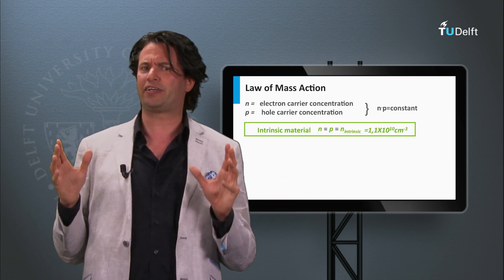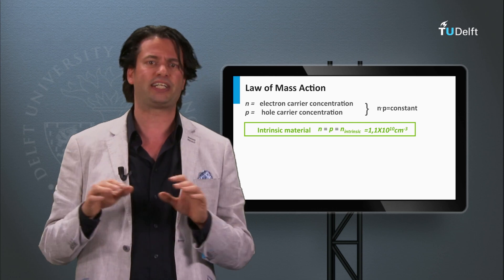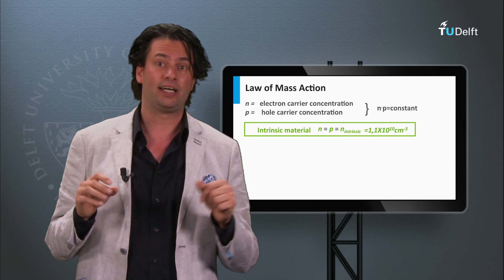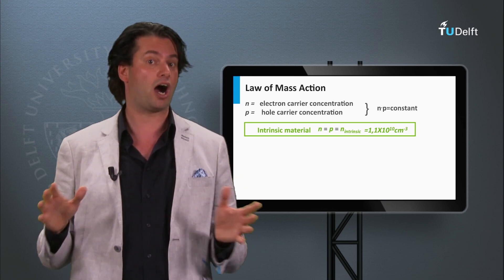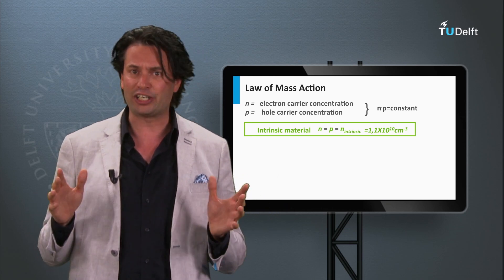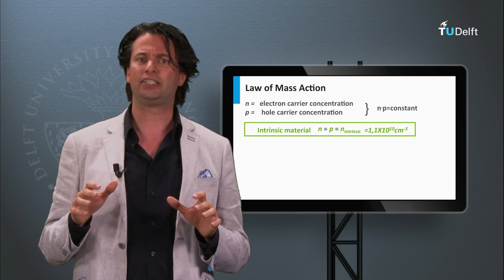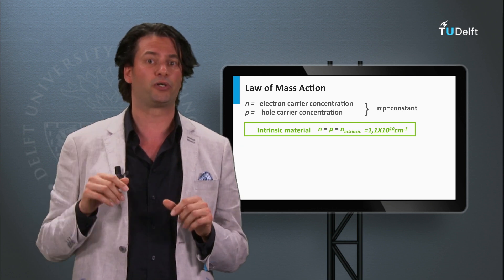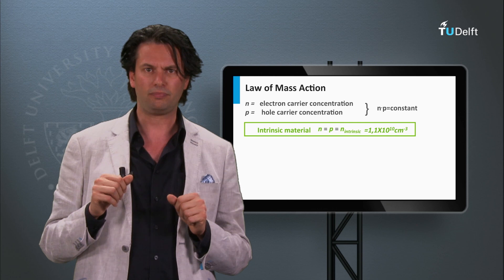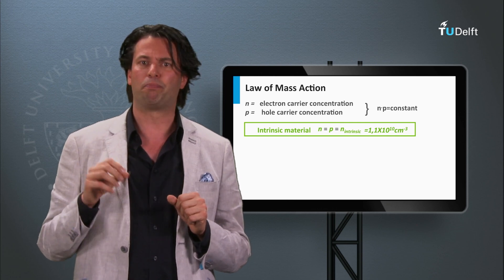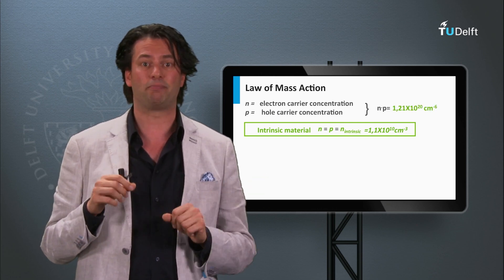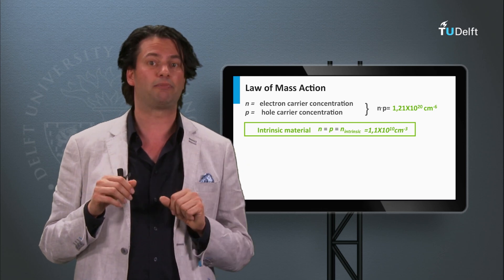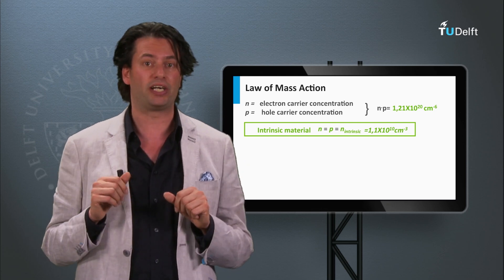Let's consider intrinsic silicon — silicon without any impurities. At room temperature the electron density n and the hole density p are equal. For silicon, the electron and hole density is in the order of 1.1 times 10 to the 10th per cubic centimeter. This means the product n times p is equal to 1.21 times 10 to the power 20 per square cubic centimeter.